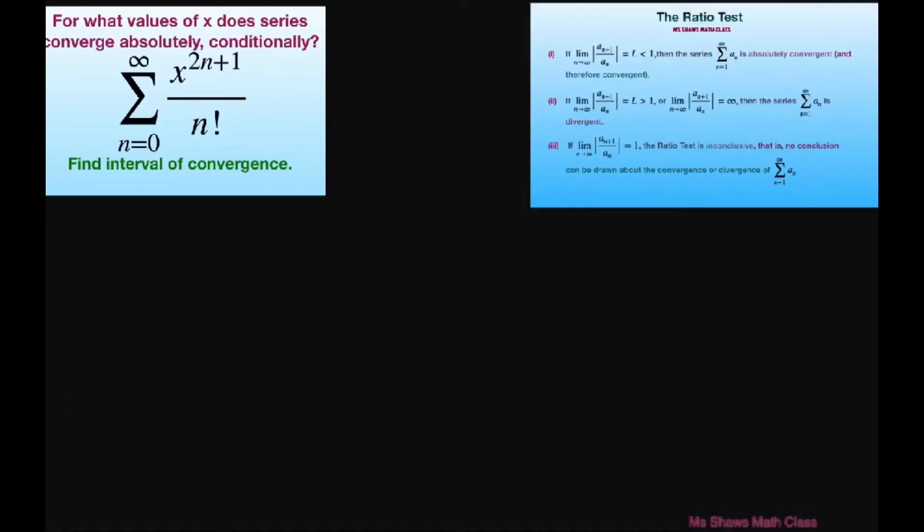We're using the ratio test whereby we have the limit as n approaches infinity of absolute value of a sub n plus 1 divided by a sub n equals some limit, and it has to be less than 1 for it to converge absolutely.